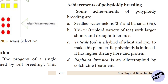Raphanobrassica is an allotetraploid produced by colchicine treatment. In this video we have discussed polyploid breeding and its achievements.